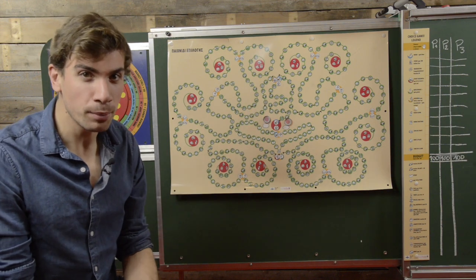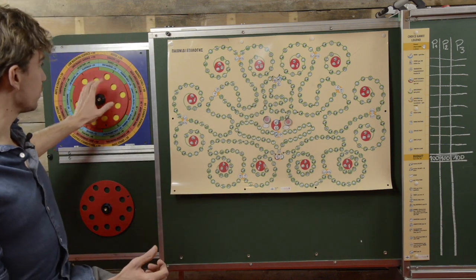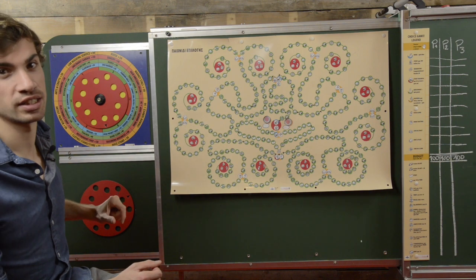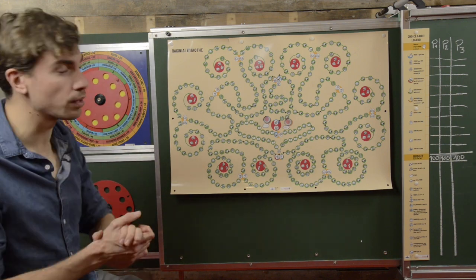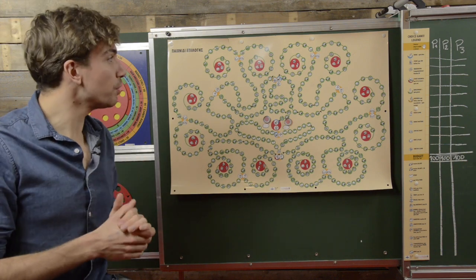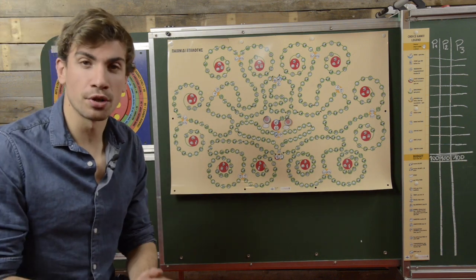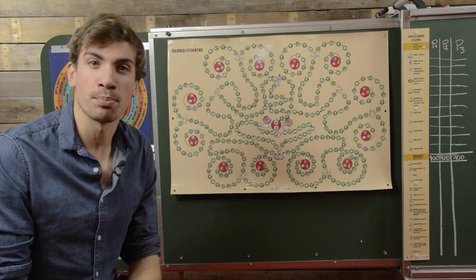You will also need the choice game rotation disc which will also function as a die as you can see over here. So if you gathered all these materials you're ready and set to go and you can start playing the choice game.